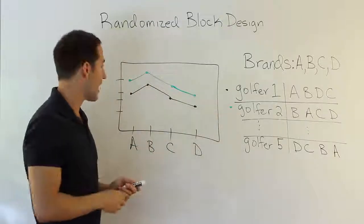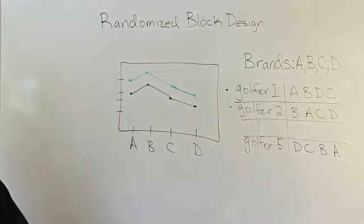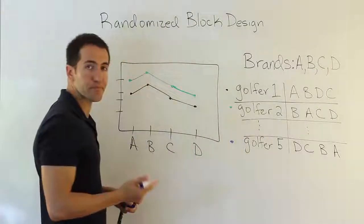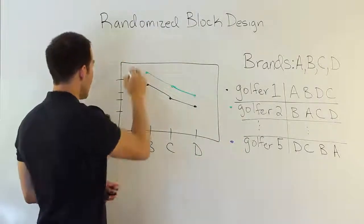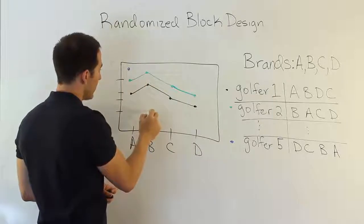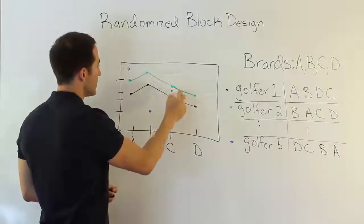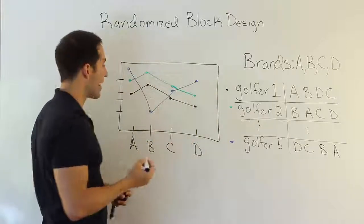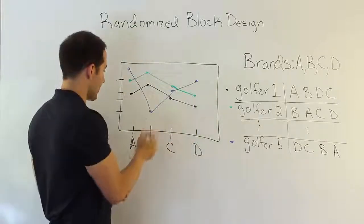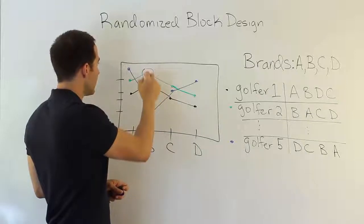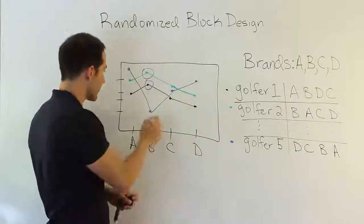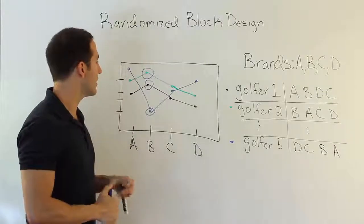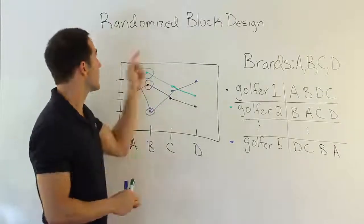What we don't want to see happen is something like this. Let me grab another marker here. We don't want to see something like this. Say golfer five comes along, and he hits the ball, and we end up having for A, he's up here, for B is down here, for C is over here, and D is over here. We don't want to see this happen. Because what that means is that there's some interaction. Generally, B is the best ball unless you give it to golfer five, then suddenly it's the worst ball. We don't want to see that happen. If that happens, then we're not meeting the assumptions for a randomized block design.